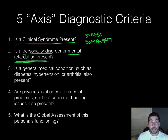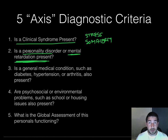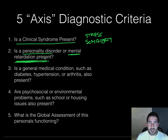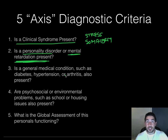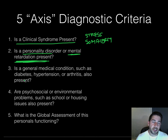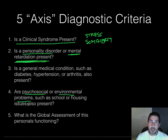With mental retardation, for instance, we noted that the disorder has to be distressful to the person. Something that might be distressful for someone with a higher IQ may not be distressful for someone with a lower IQ. So for a person with mental retardation, it may not qualify as a mental disorder because it may not be distressful to them. The third axis looks at whether a general medical condition such as diabetes, hypertension, or arthritis is also present. The fourth axis asks whether there are psychosocial or environmental problems, such as school or housing issues, playing a role.